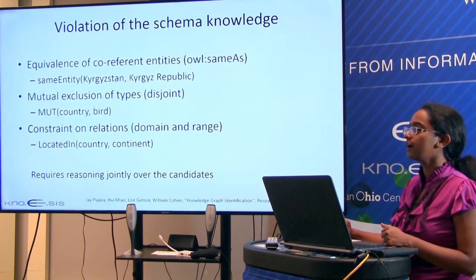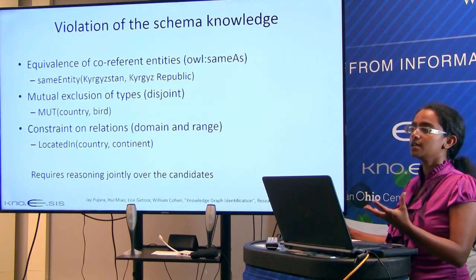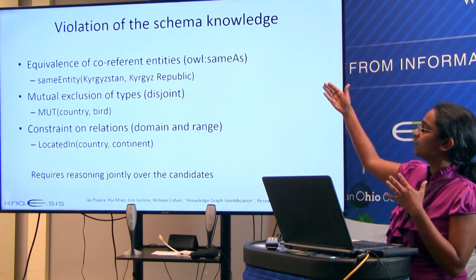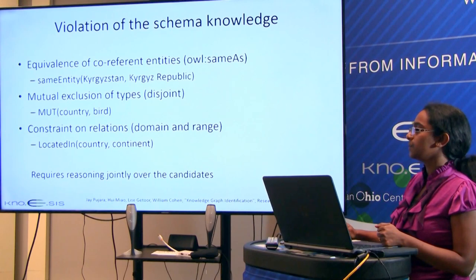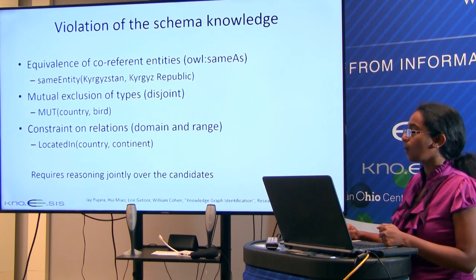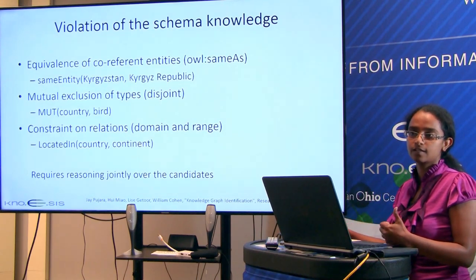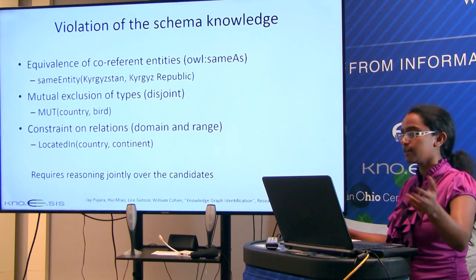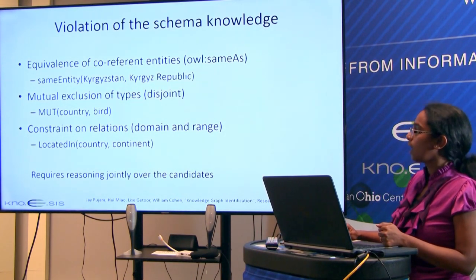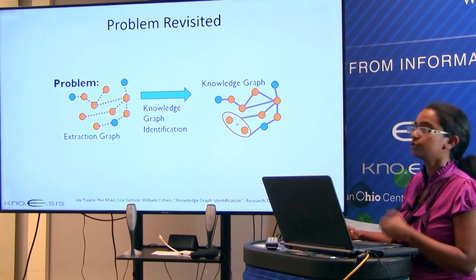If we have schema knowledge — for example, knowing that something cannot be both a country and a bird — we can identify problems in the knowledge graph. We can run reasoning algorithms to check for inconsistencies, but as discussed, this is impractical at scale. DBpedia has around 1 billion triples; running a traditional reasoner on that is not feasible. We need a better way to identify noise and produce better knowledge graphs.